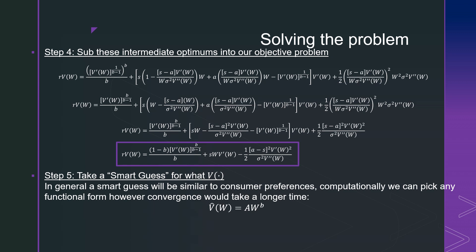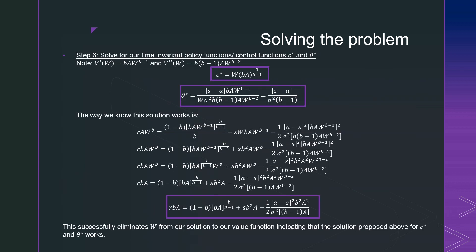In general, we could use any value for what our guess is going to be, but computationally it's going to take longer. So for step number five, we're going to pick this particular functional form A times W to the B, which is similar somewhat to our preferences. Step number six is that we're going to solve for our time-invariant policy functions C star and theta star. Our first and second derivatives are going to be the following, and we just plug and chug. We get these policy functions for consumption and this rule for allocating our portfolio.